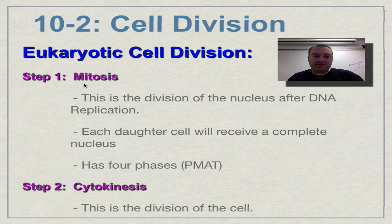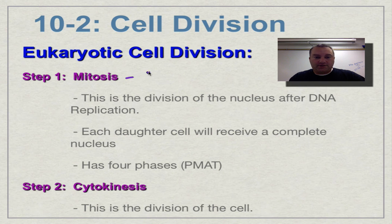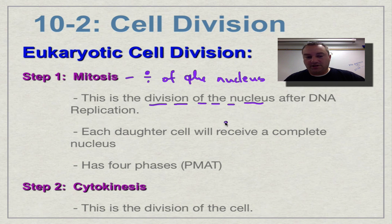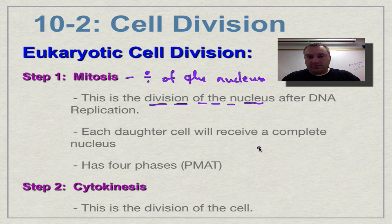The first step is mitosis — simply the division of the nucleus. We need to make sure that each daughter cell has a complete set of nuclear material so it can carry out all the processes for life. There are four phases, remembered as PMAT: prophase, metaphase, anaphase, and telophase. We'll have separate screencasts on each of those topics.